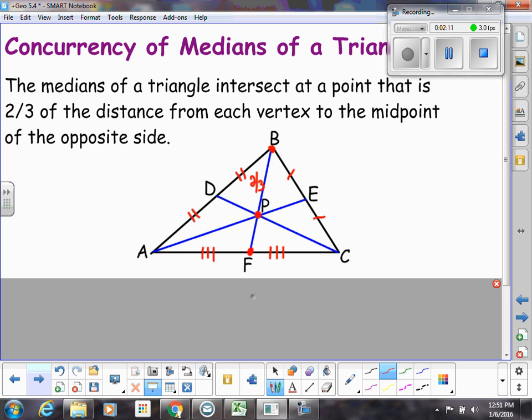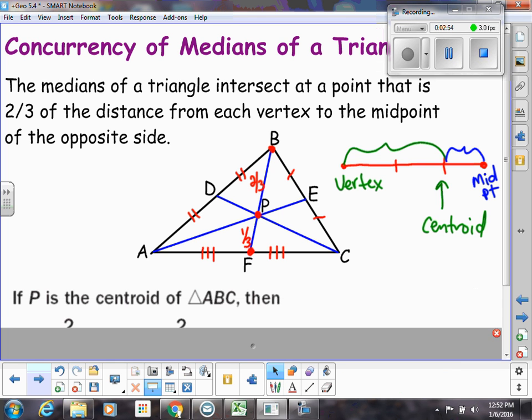And if that's two-thirds, how much is left just from P to F? Yeah, that would be one-third. So the whole length would be a full three-thirds. So I need you to think in terms of thirds for me and fractions. So if I take a segment and I split it into thirds, two of those thirds will get you from the vertex to the centroid, and only one of those thirds will get you from the centroid to the midpoint. That's the idea behind that concurrency of the centroid.